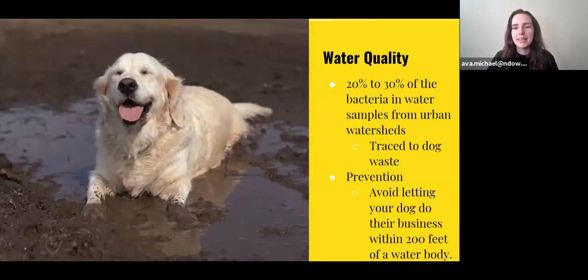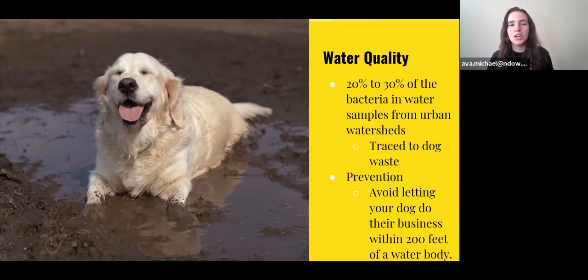Dog waste has many negative impacts on water quality. Studies have traced 20% to 30% of the bacteria in water samples from urban watersheds to dog waste. There are ways of preventing this. You can avoid letting your dog do their business within 200 feet of a water body, and never throw dog waste into a storm drain. Although some people might believe that this provides more nutrients for that water, it's very toxic. Whenever this is done over a long period of time, it can really contaminate that water and cause that algae to build and grow.